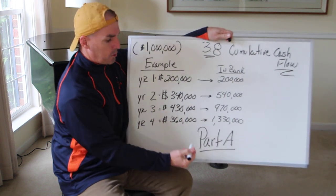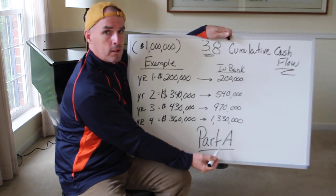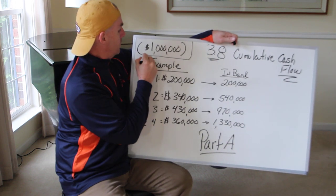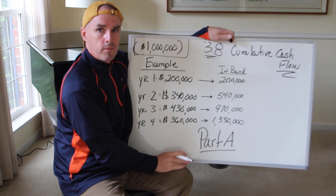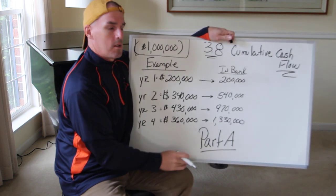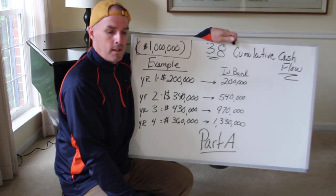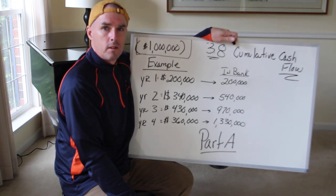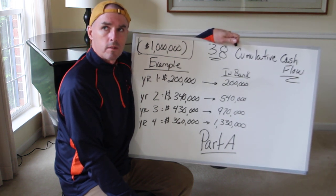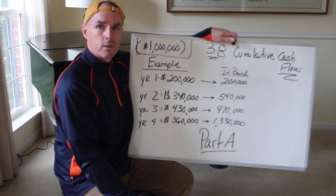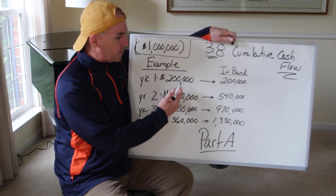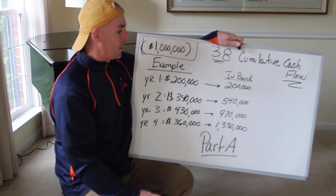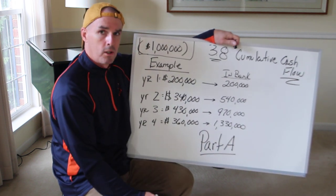So the first step, part A, we have a million dollars out there and we're going to sign Pat Hogan to a million dollar contract to the Buffalo Bills. So the Buffalo Bills are going to want to know when they're going to get their money back off of that million dollar investment. And here's how you're going to do it.